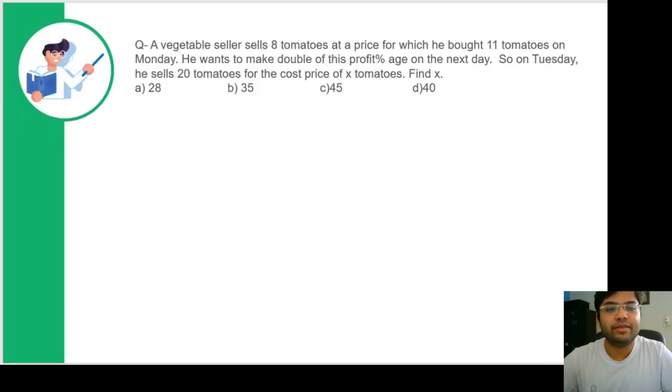So let's reach this question. A vegetable seller sells 8 tomatoes at a price for which he bought 11 tomatoes on Monday. He wants to make double of this profit percentage on the next day. So on Tuesday, he sells 20 tomatoes for the cost price of X tomatoes. Find X.